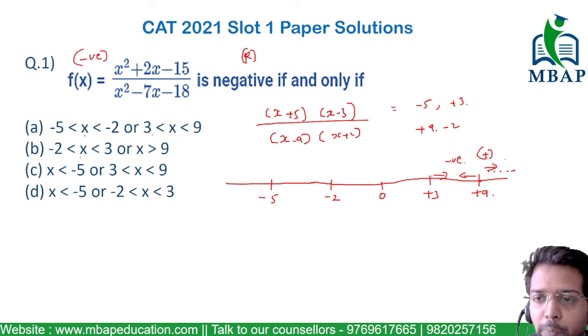So certainly, if you go with this range, you'll find 9 beyond on the number line will be positive, 3 to 9 will be negative, anything in the range of -2 to +3 will again become positive and -5 to +2 will again become negative and this will also be positive.